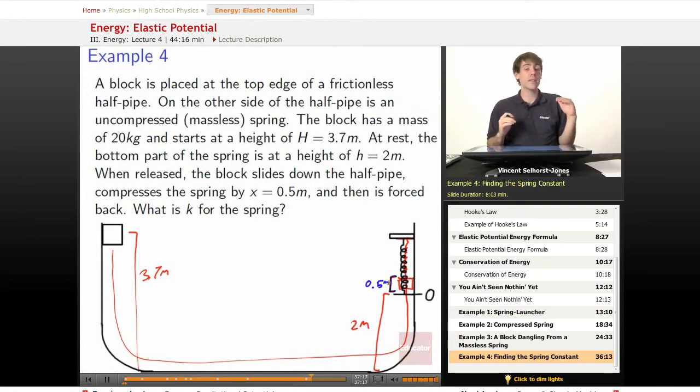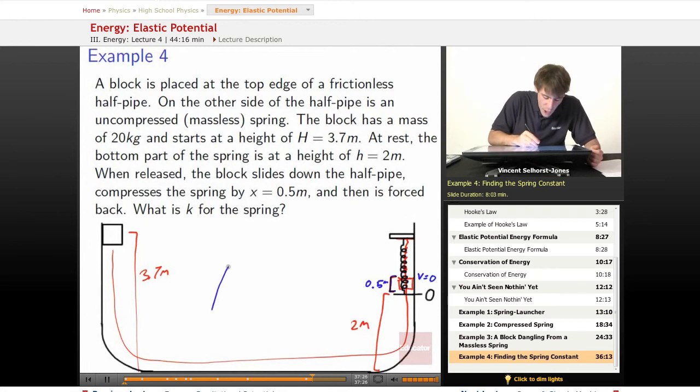When you're at the very apex, your velocity is 0. We know at the moment when you are forced back, your velocity is 0. If we take a quick example that's not quite the same as this, we toss a ball into the air, right?